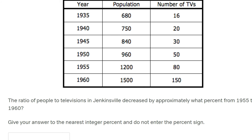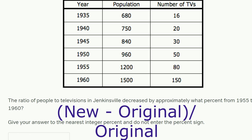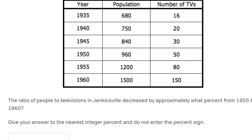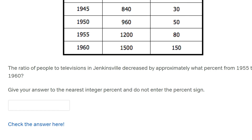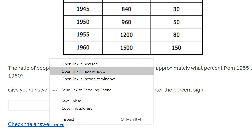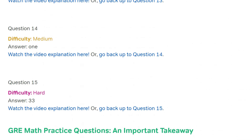Now all we have to do is find the percentage decrease. Any percent change question is: new minus original, divided by the original, times 100. It's that denominator that people get wrong — they often divide by the new value. We're going from 1955 to 1960, so the new is 1960 and the original is 1955. So: 10 minus 15 is negative 5, divided by 15, which is negative one third, which is approximately negative 33.33%. The negative just indicates it's a percent decrease. The ratio expressed as a number has decreased by 33%, and the answer is indeed 33%.